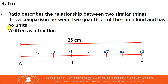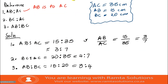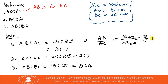I said ratios have no units. Let me show you why. AB was 15 centimeters and AC was 35 centimeters. As you can see, the centimeters cancel each other out — and that is why ratios have no units.